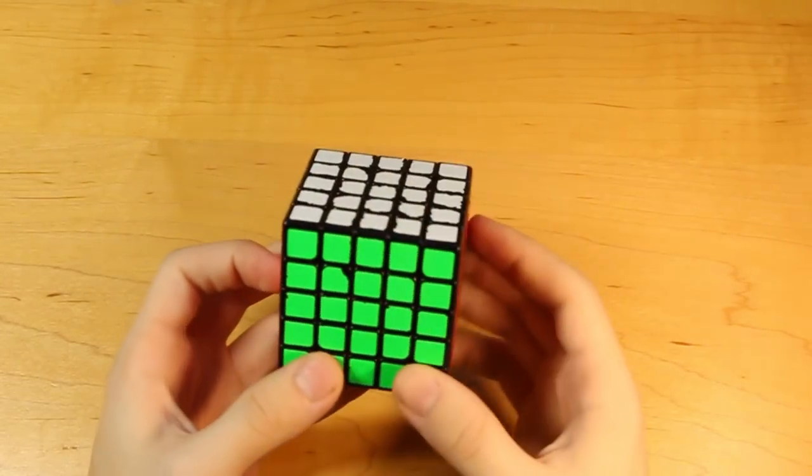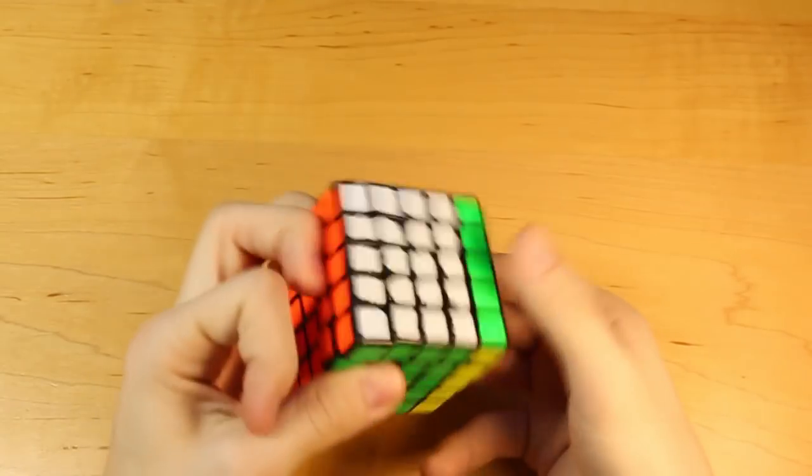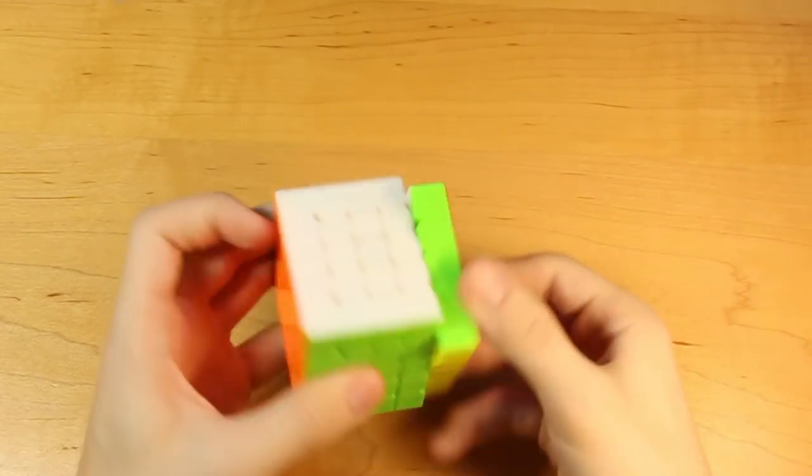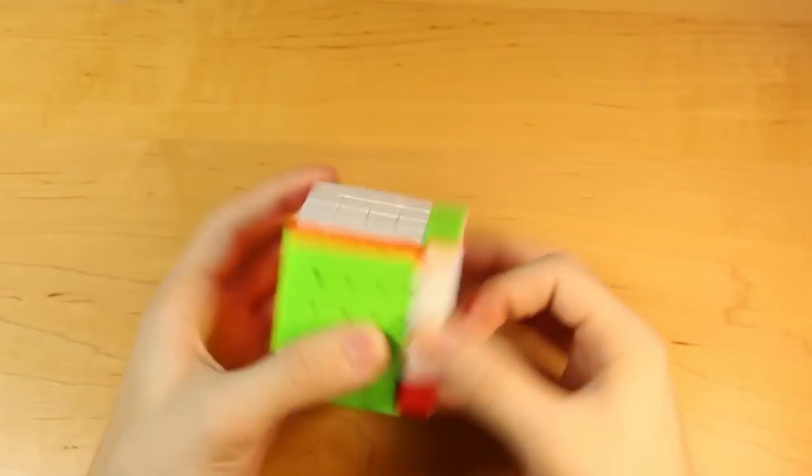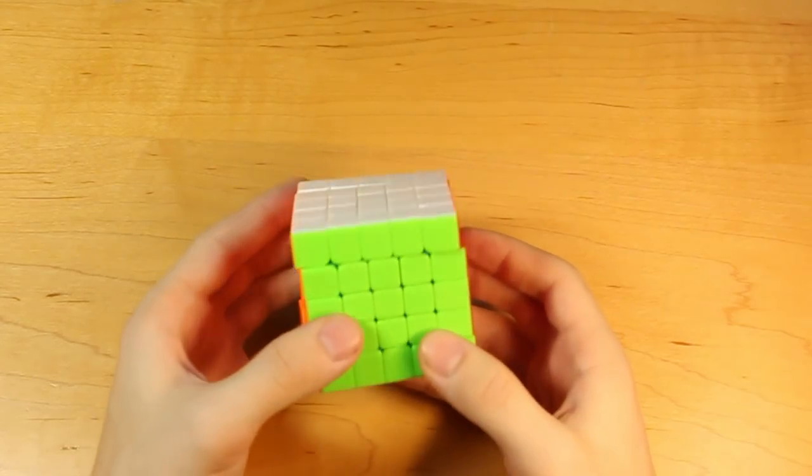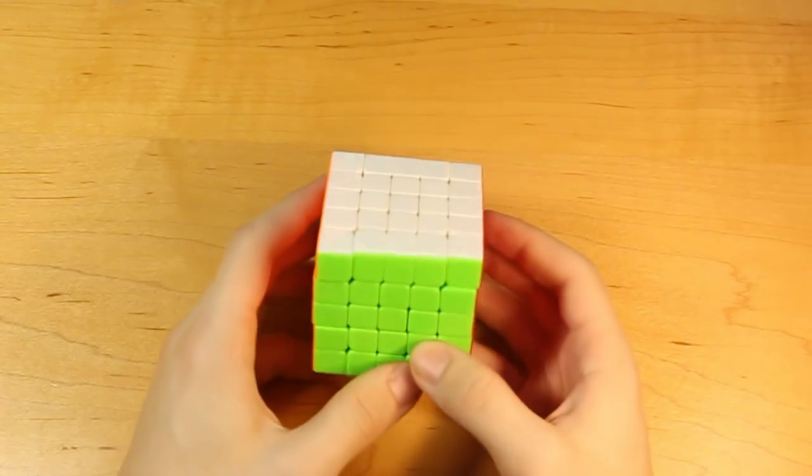This was my first ever magnetic 5x5. The Wushuang M. And I did a lot of solves on this. And my current main. Another Wushuang M. Because I'm okay with this cube. And I don't really need an upgrade. I mean, I could get the GTS or Valk 5. But not until this breaks or something.